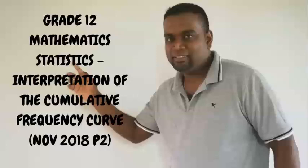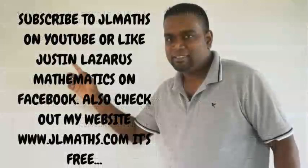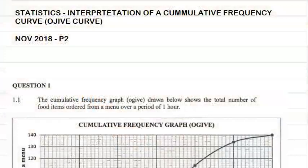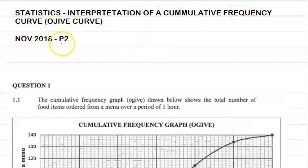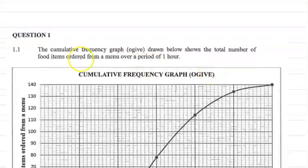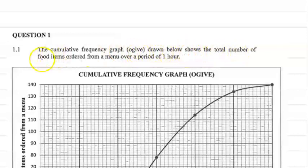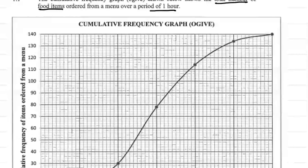Hi guys, welcome to another video. In this lesson we're going to be looking at statistics interpretation of the cumulative frequency curve, also known as the ogive curve. The question we're looking at is from the November 2018 Paper 2. It reads: the cumulative frequency graph or ogive drawn below shows the total number of food items ordered from a menu over a period of one hour.